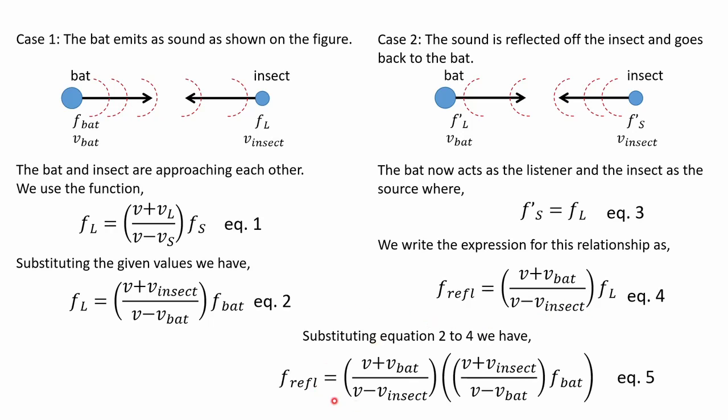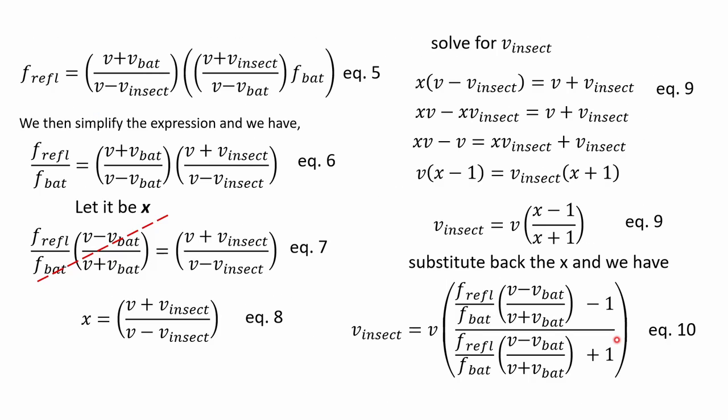We then simplify the expression as shown in equation six. We group the similar terms—the frequencies on the left side—and also group the expression for v_bat by cross multiplying it, and we arrive at this expression here on the left term.